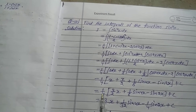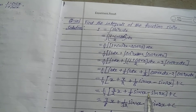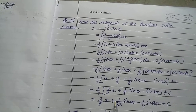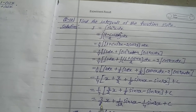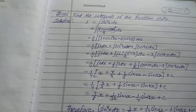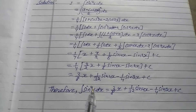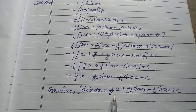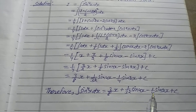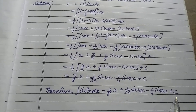Combining x + x/2 = 3x/2, so I equals (1/4)[3x/2 + (1/8)sin4x - sin2x + C]. Multiplying (1/4) through: I equals (3/8)x + (1/32)sin4x... Correcting: the final answer is I = (3/8)x + (1/4)sin4x - (1/4)sin2x + C. Therefore, the integration of sin⁴x dx equals (3/8)x + (1/4)sin4x - (1/4)sin2x + C.